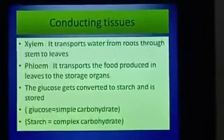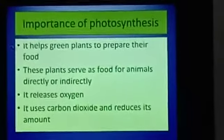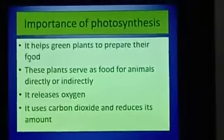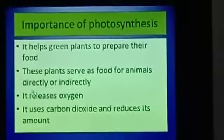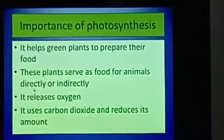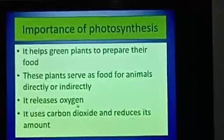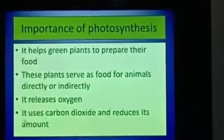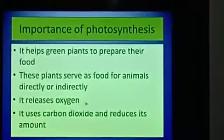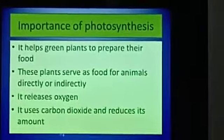Lastly, let us see why photosynthesis is so important. Photosynthesis helps green plants to prepare their food — not only for themselves; these plants serve as food for animals also. Herbivores directly use plants as food. Some animals indirectly depend on plants for food, like the carnivores. Photosynthesis also releases oxygen, which is a very important gas. Photosynthesis uses carbon dioxide, so the level of carbon dioxide reduces. These are the important functions which photosynthesis does for us.